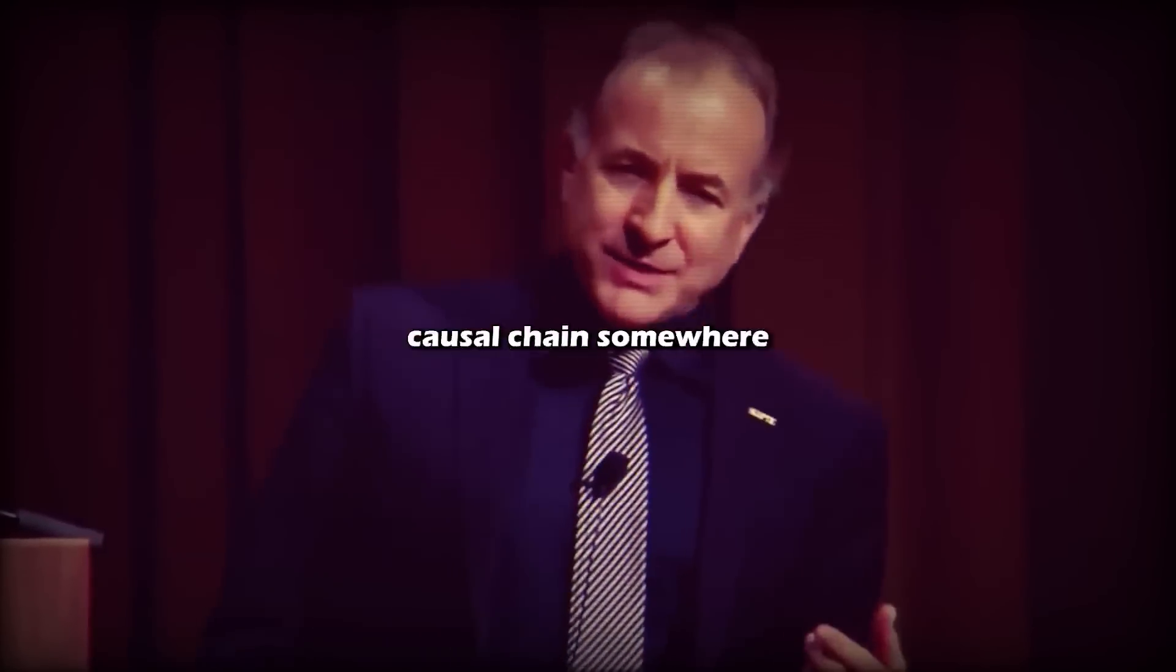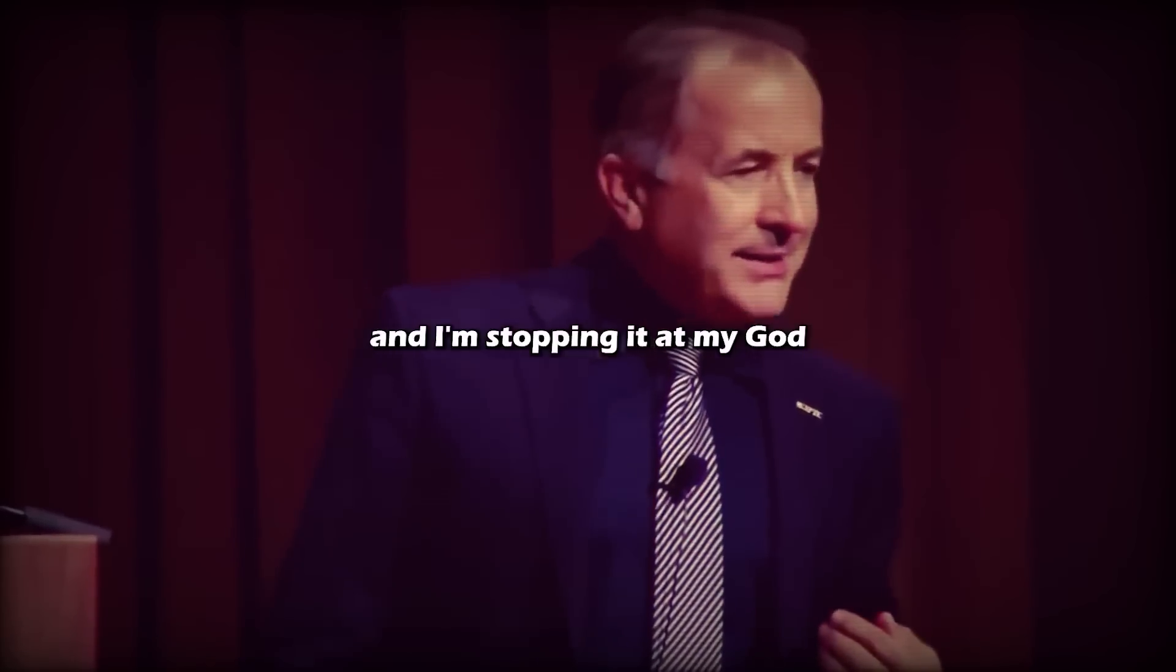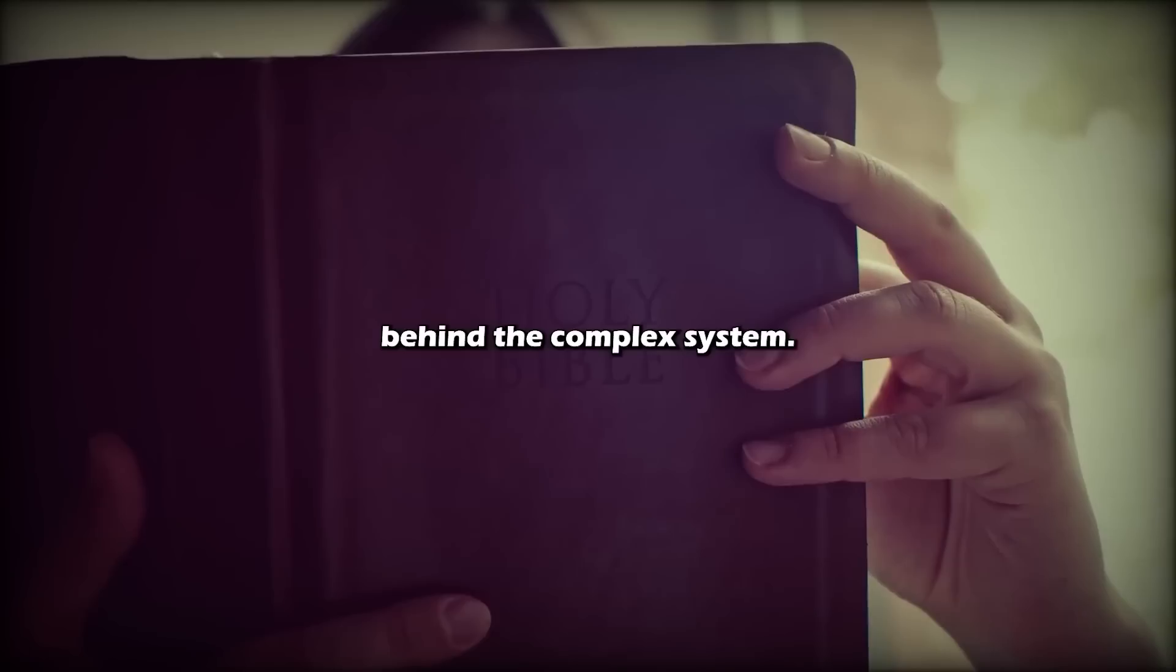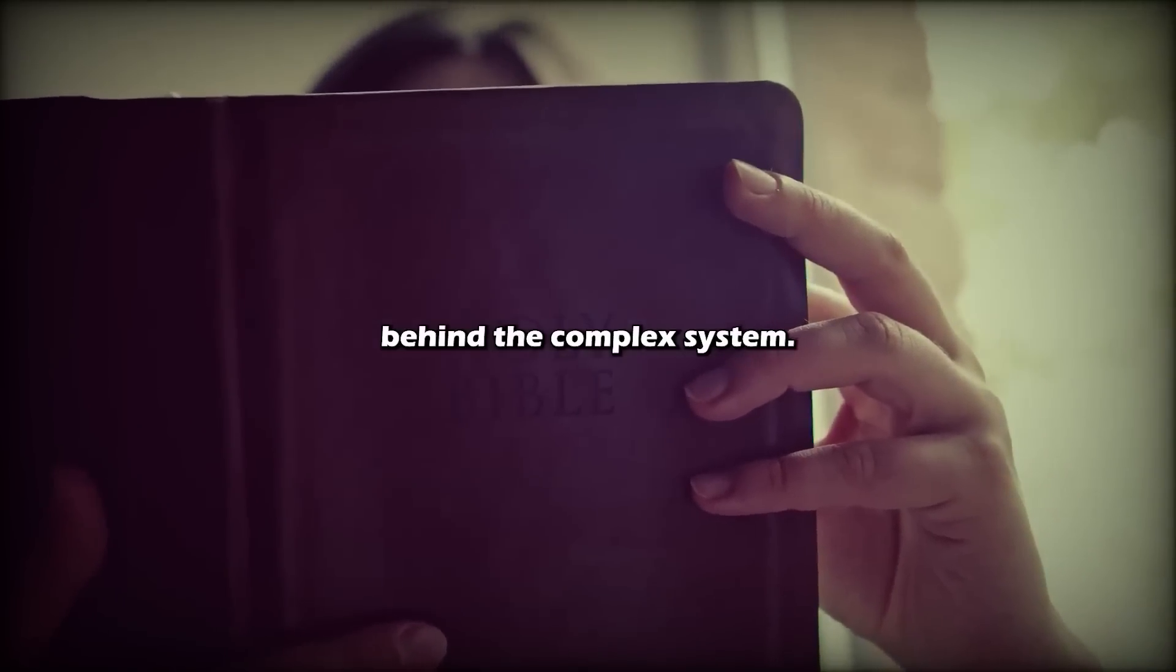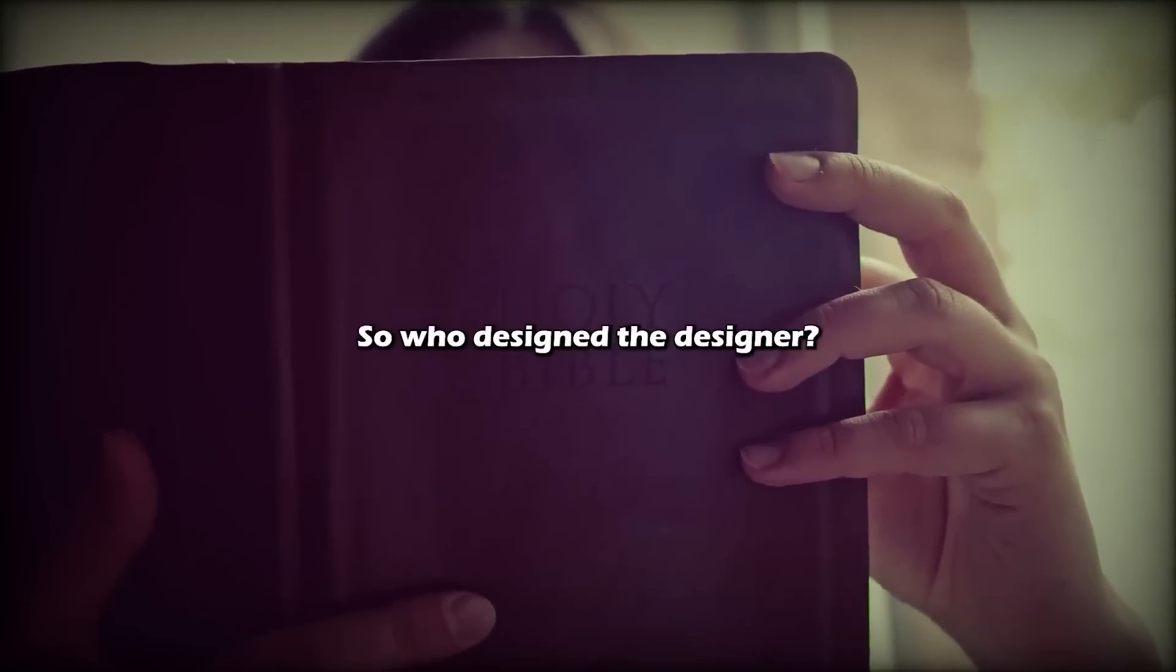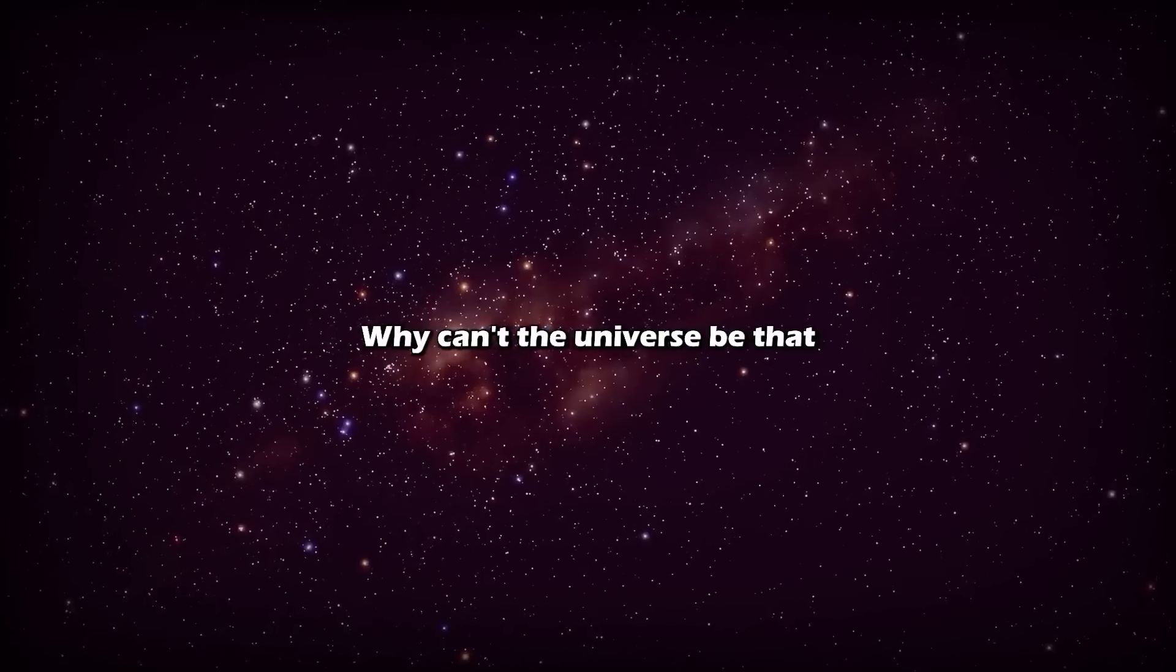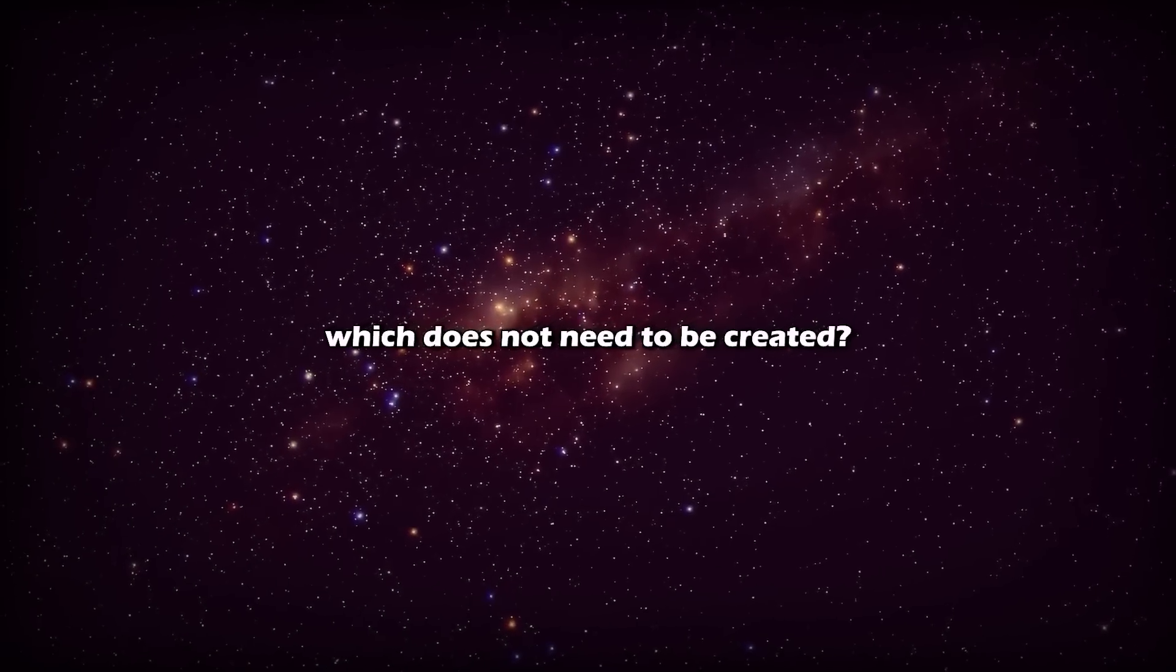Now you can't just say, well, you've got to stop the causal chain somewhere, and I'm stopping it at my God. Why? You're the one who initiated the argument that there has to be a designer behind the complex system. So who designed the designer? Well, the designer is that which does not need to be created. Why can't the universe be that which does not need to be created?